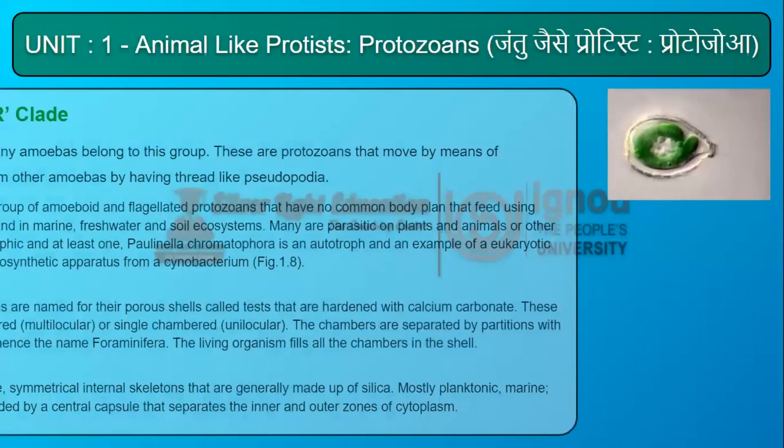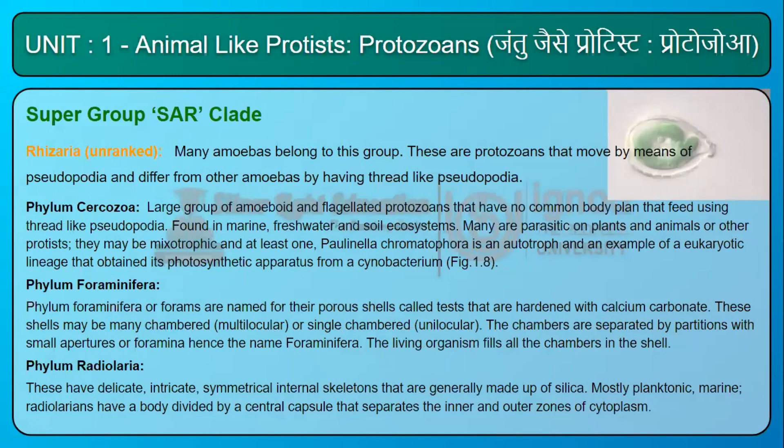Rhizaria — unranked; many amoebas belong to this group. These are protozoans that move by means of pseudopodia and differ from other amoebas by having thread-like pseudopodia. Phylum Cercozoa is a large group of amoeboid and flagellated protozoans with no common body plan that feed using thread-like pseudopodia. Found in marine, freshwater, and soil ecosystems, many are parasitic on plants, animals, or other protists. At least one, Paulinella chromatophora, is an autotroph — an example of a eukaryotic lineage that obtained its photosynthetic apparatus from a cyanobacterium.